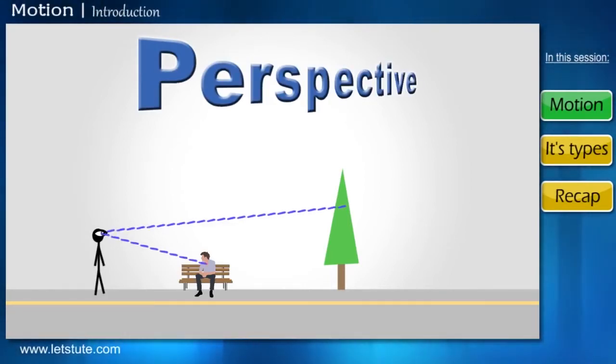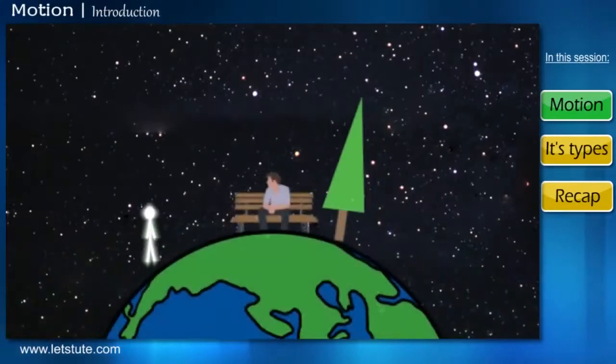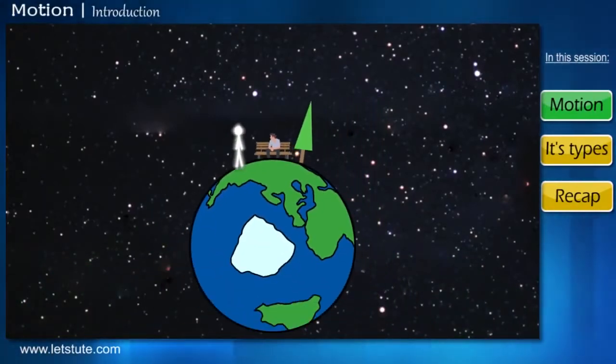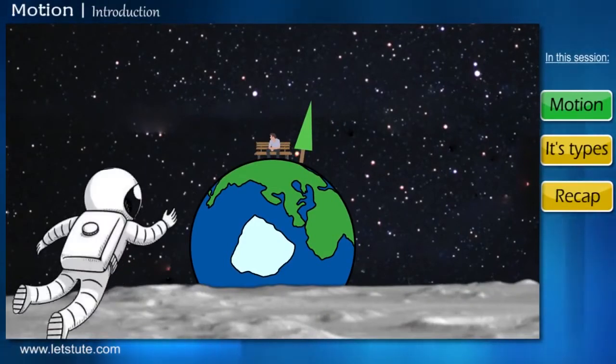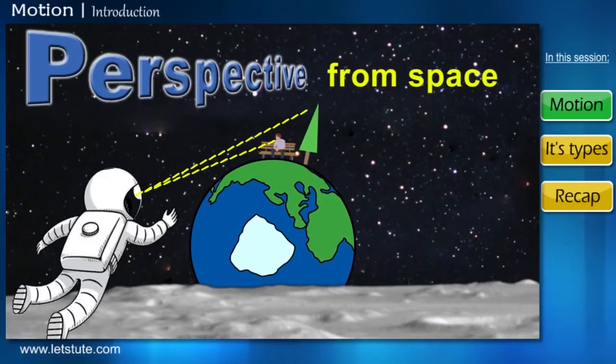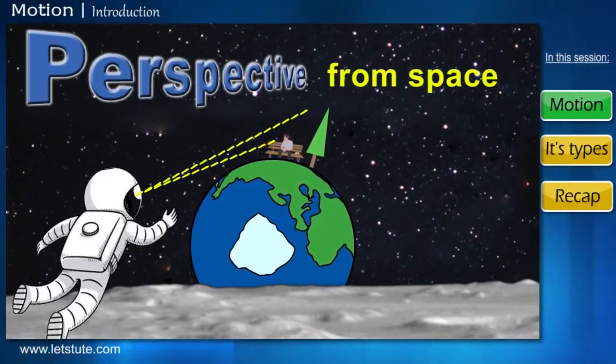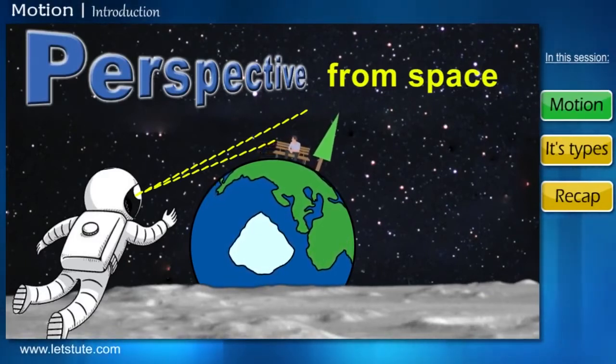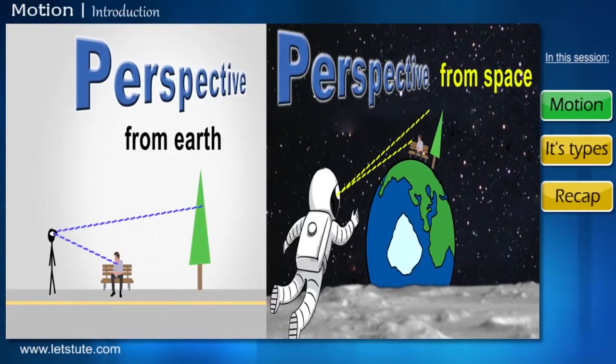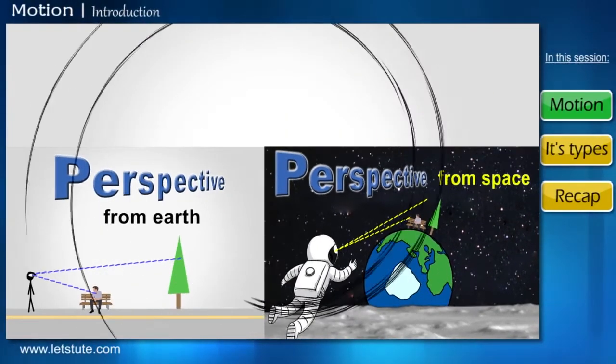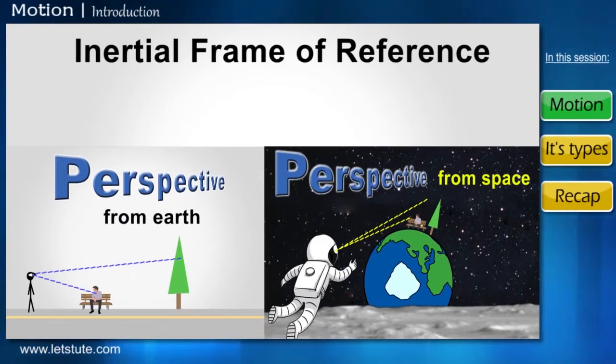If we consider stationary objects on Earth, then from our perspective, these objects do not change their position, because we too are on Earth with these objects. However, if we were astronauts, and we were to view these same objects from space, then from our perspective, these objects would appear to change their position, and now seem to be moving. This perspective position or relative position of an object is called inertial frame of reference.